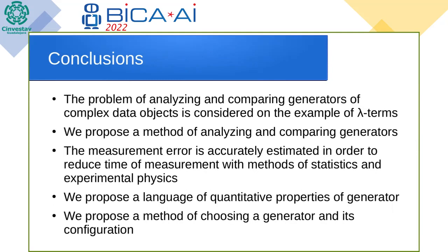To sum up, we consider the problem of analyzing and comparing generators of complex data objects on the example of typed lambda calculus. We proposed the method that is based on statistical method and methods of experimental physics, which allow to accurately estimate the error in order to reduce it. The language of quantitative properties is proposed and finally we implemented our method in JavaScript to choose the parameters of our generator and applied for property-based testing of our programs that work with lambda terms. Thank you for your attention.